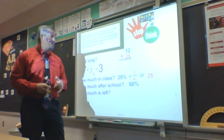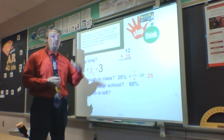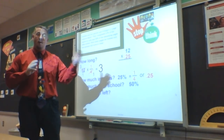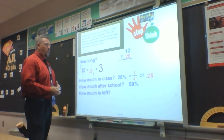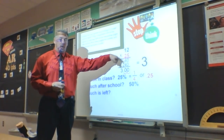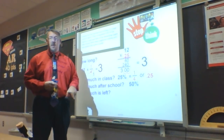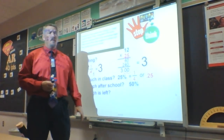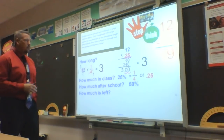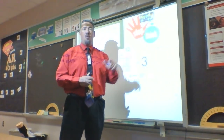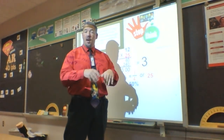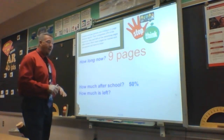Using the decimal method: 12 times 0.25. When I multiply those together, I get 300, but with two decimal spaces I move the decimal two times, which gives me 3. So both methods confirm three pages were written in class. Now, I started with 12 pages and got three done in class — that was my 25%. So how much is left? I have nine pages left to still work with.